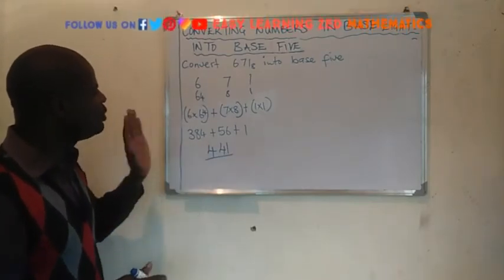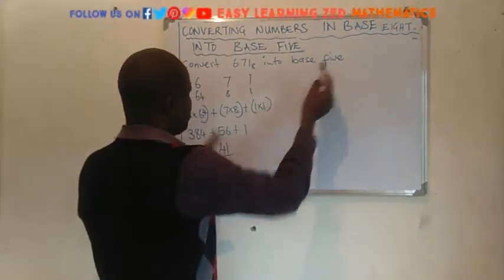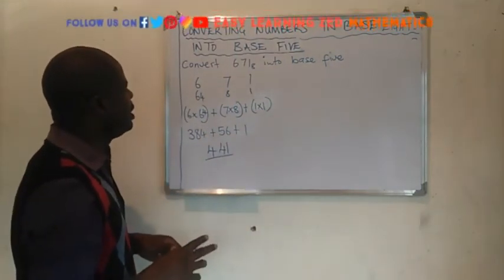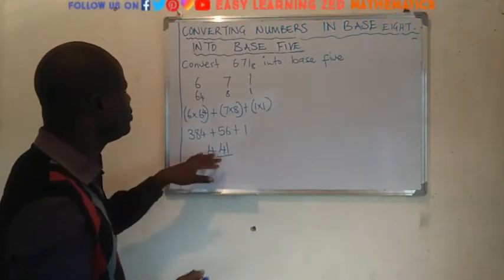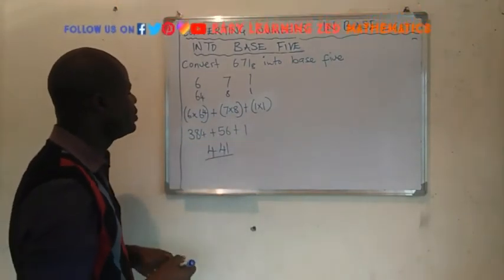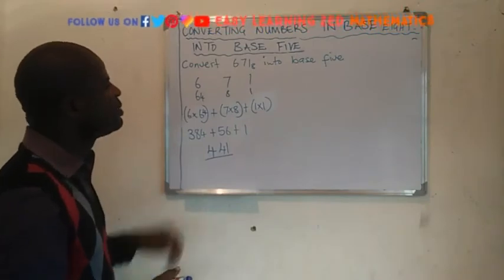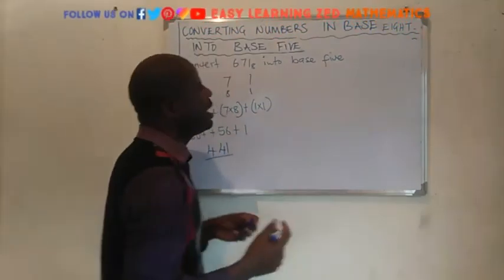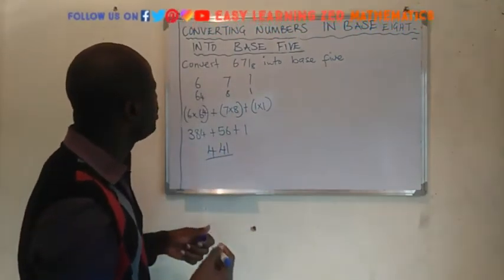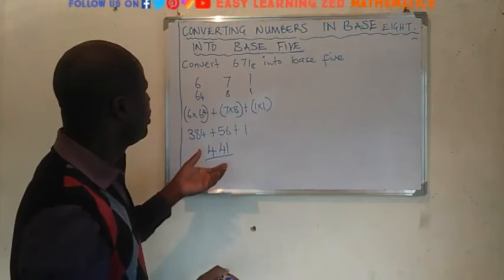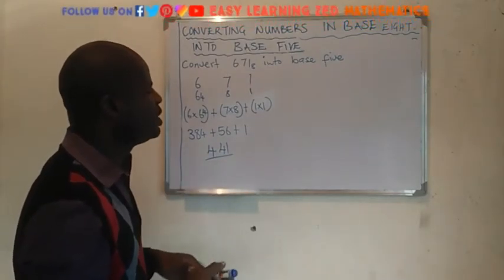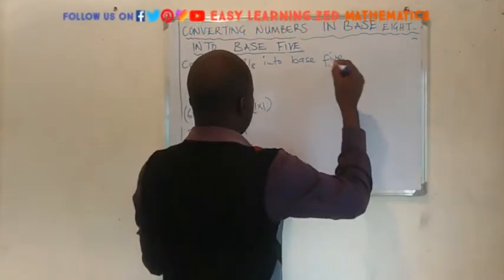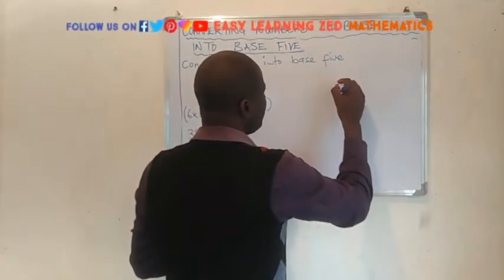Now we come here — we want to convert this number into base 5, because they have told us to give the answer in base 5. So what we are going to do is convert this 441 into base 5. We can either choose to use the place value method or the remainder method, whichever is comfortable with you. Let me go with the remainder method.